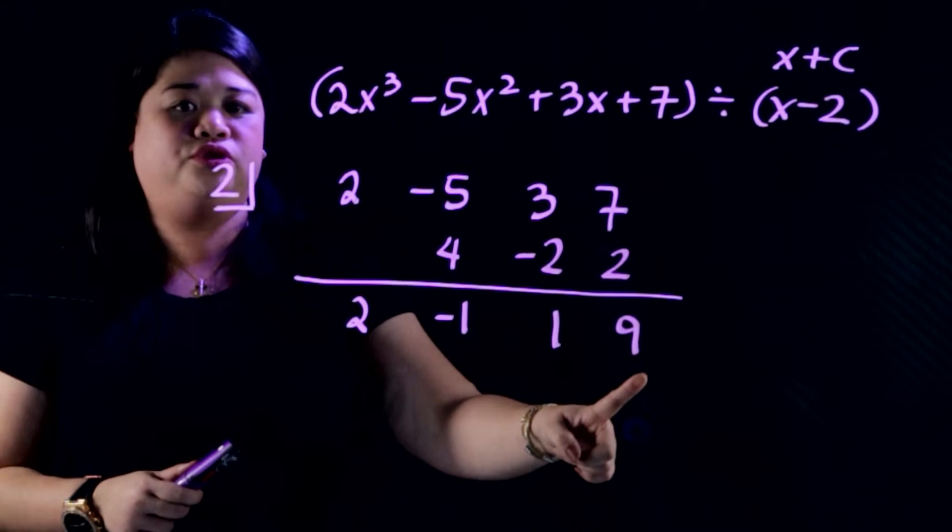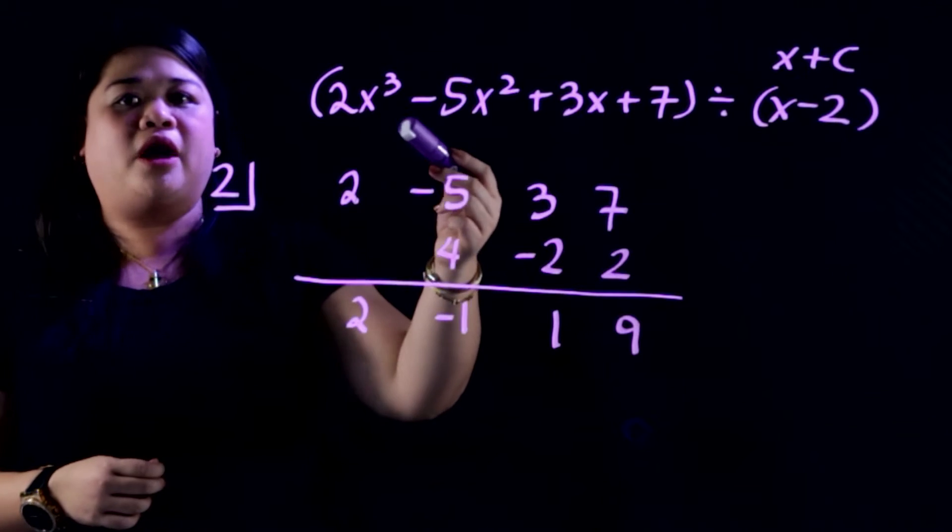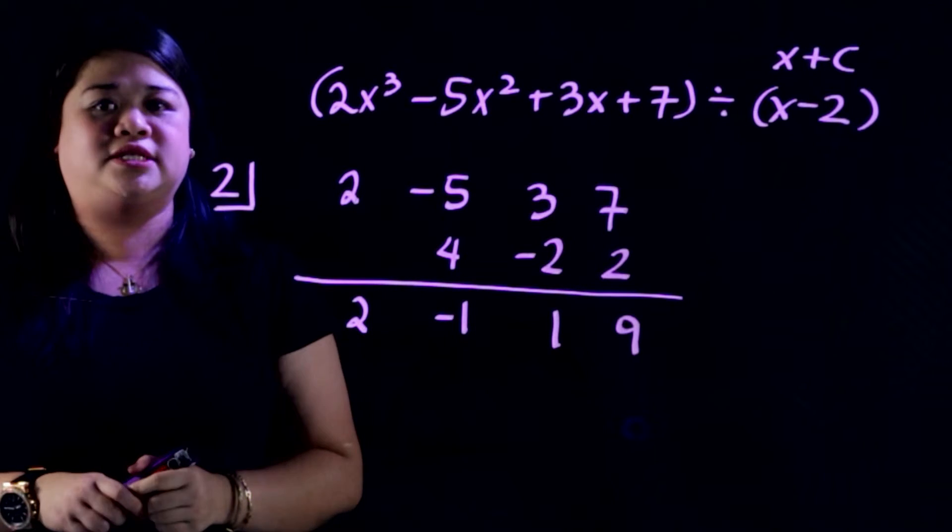So notice, hindi nag-zero yung dulo. So anong ibig sabihin yan? Yung polynomial natin, yung mga variables sa polynomial, babawasan natin ang exponent.